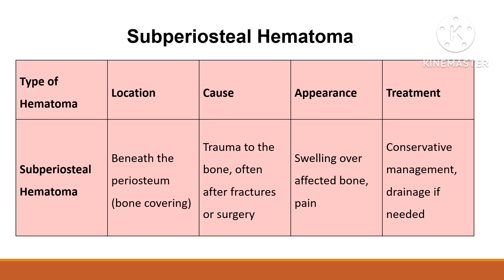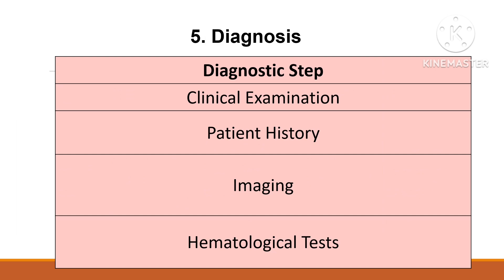Subperiosteal hematoma forms beneath the periosteum — the outer covering of the bone — typically after surgical procedures or fracture. Diagnosis includes clinical examination with inspection and palpation of the swelling, patient history identifying recent dental procedures or trauma, and imaging. Radiographs or CT may be used to rule out other pathologies like abscesses or cysts, and hematological tests may be required to rule out clotting problems.